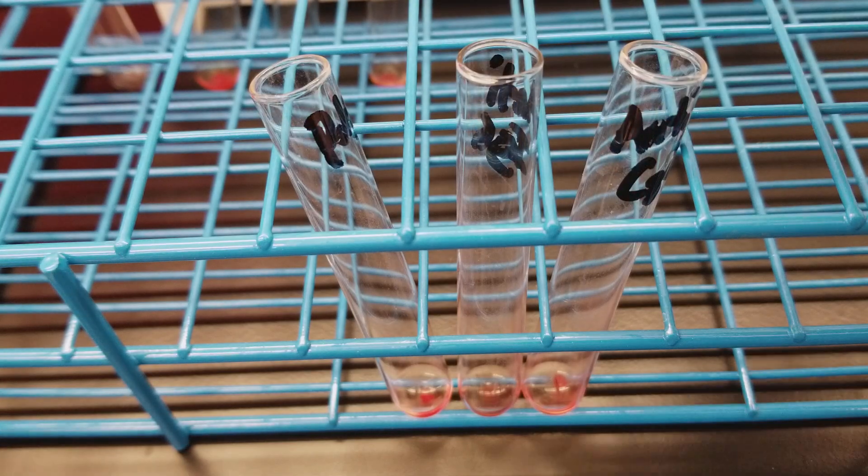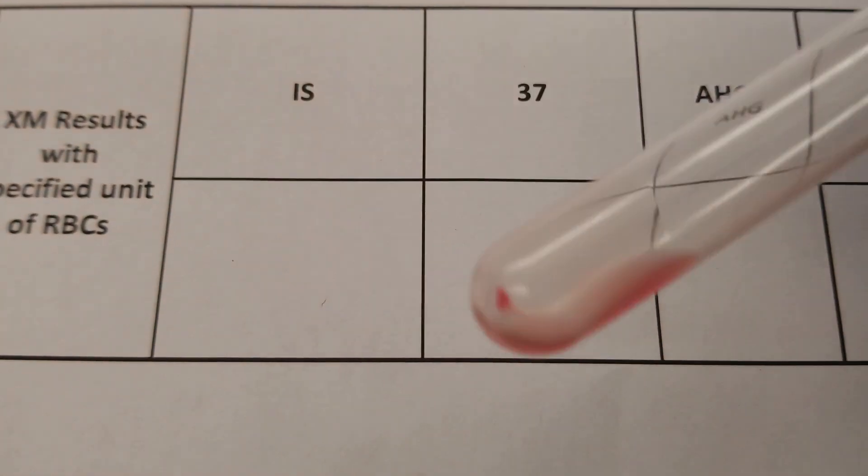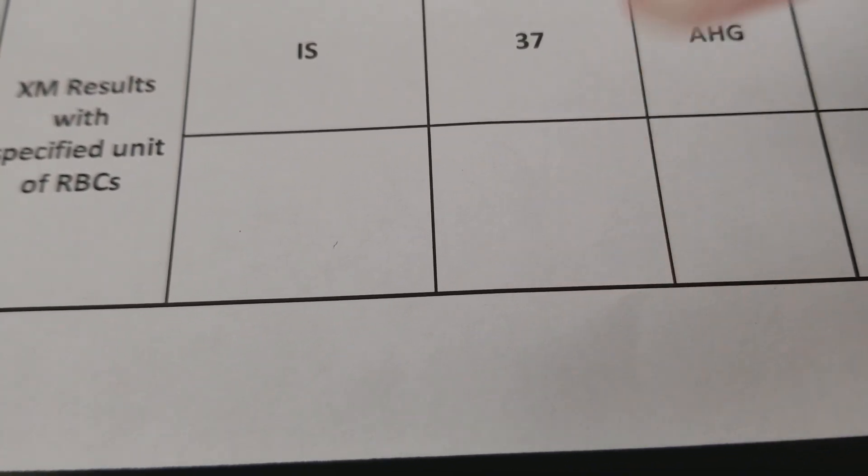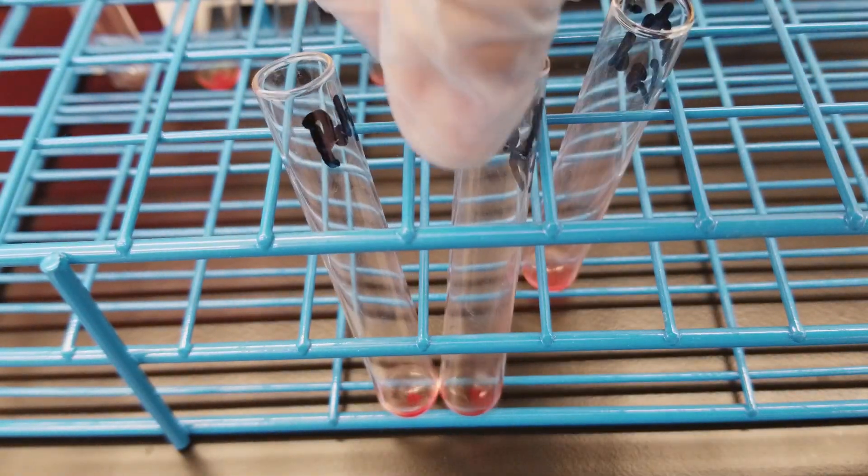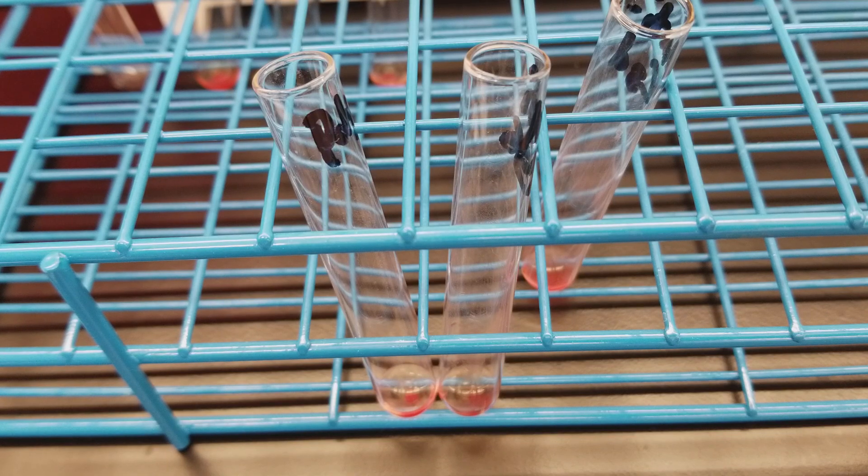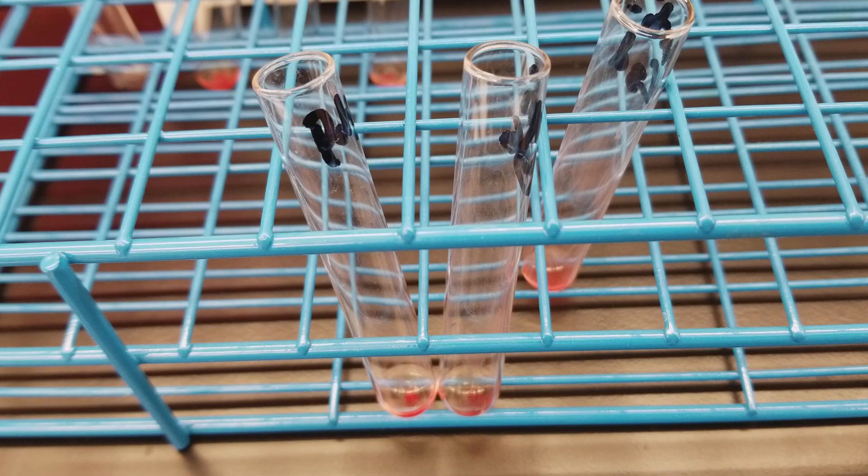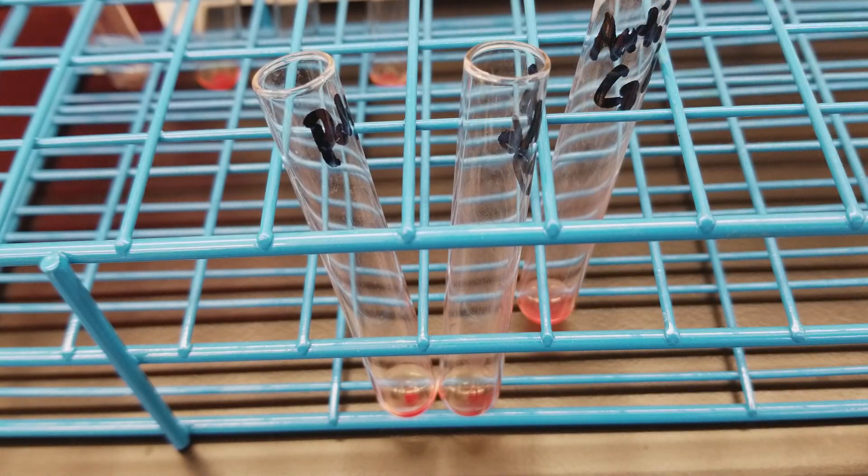And then let's see the complement. The complement is negative. So that means we are expecting that it was the IgG that is sensitizing the red cells, also known as coating the red cells. So what I'm going to do is add check cells to this anti-C3D since we had a negative here.